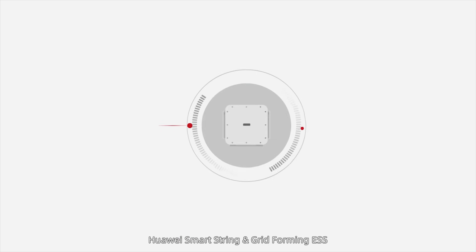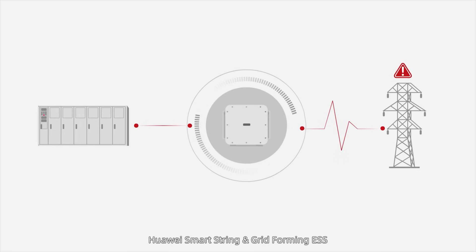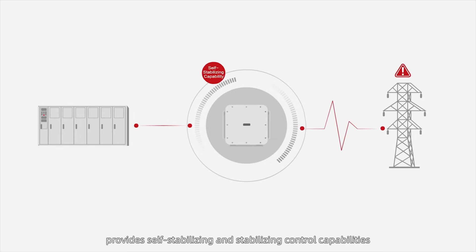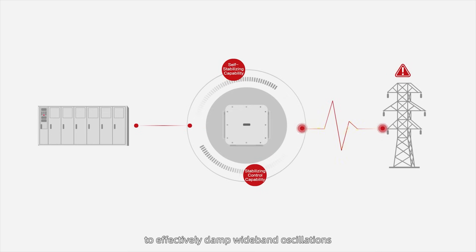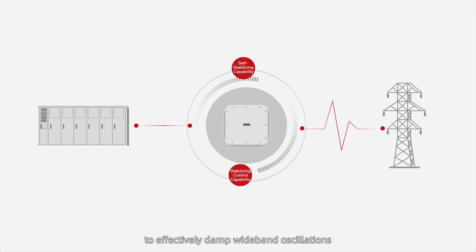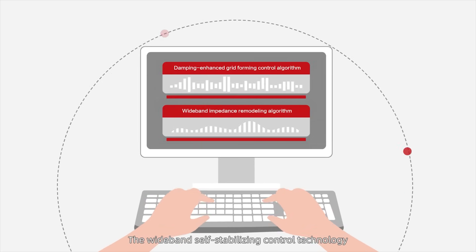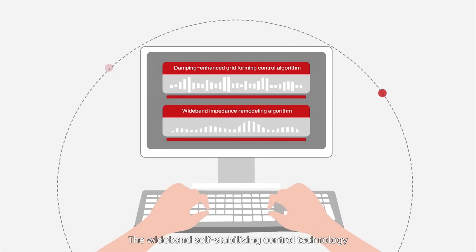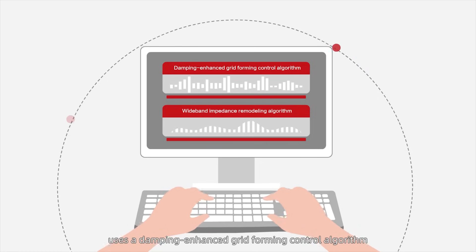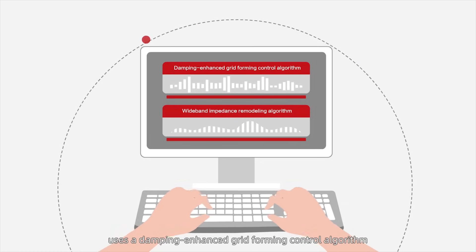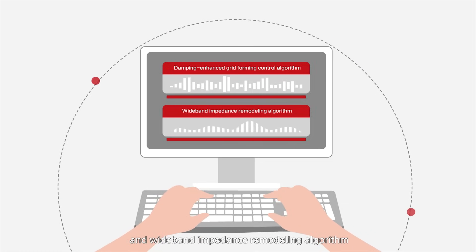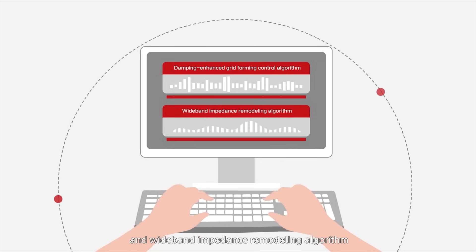Huawei SmartString and Gridforming ESS provide self-stabilizing and stabilizing control capabilities to effectively damp wideband oscillations. The wideband self-stabilizing control technology uses a damping-enhanced grid-forming control algorithm and wideband impedance remodeling algorithm.